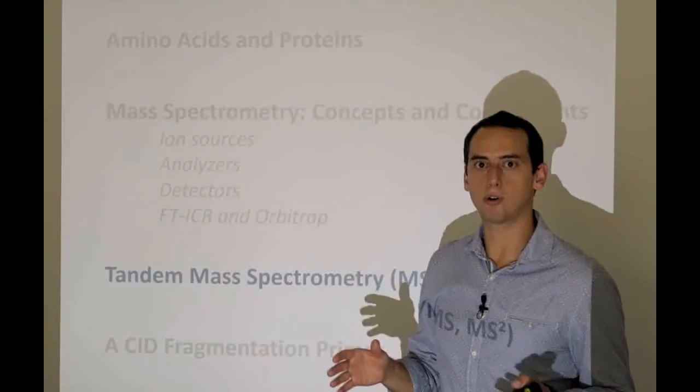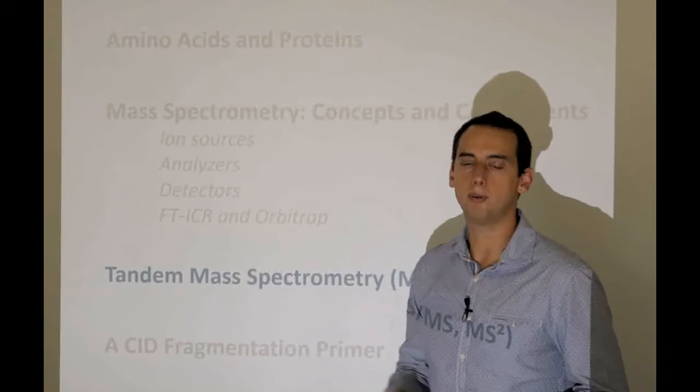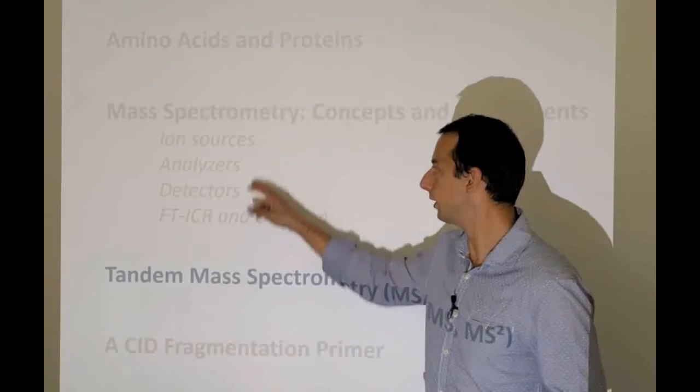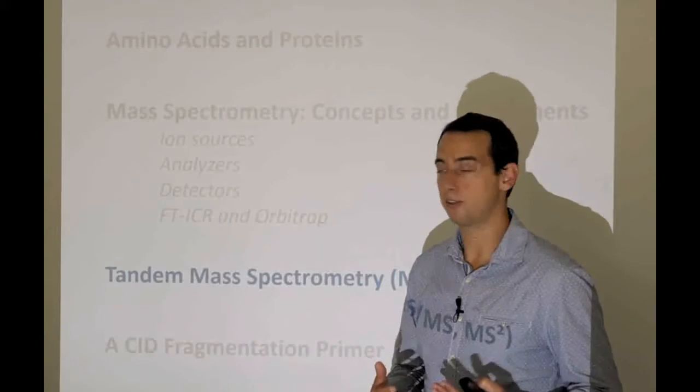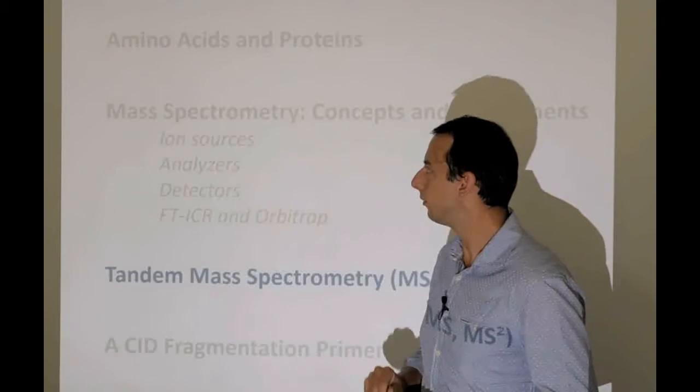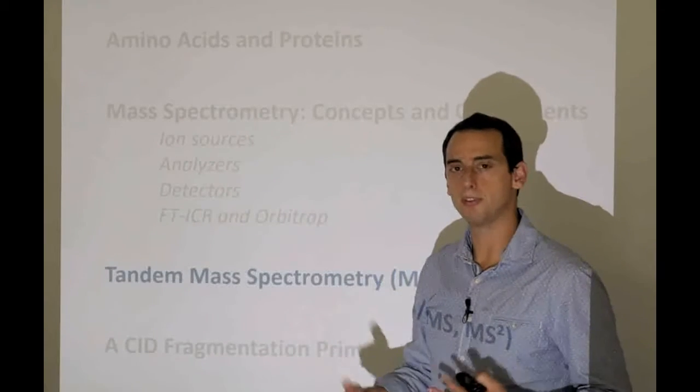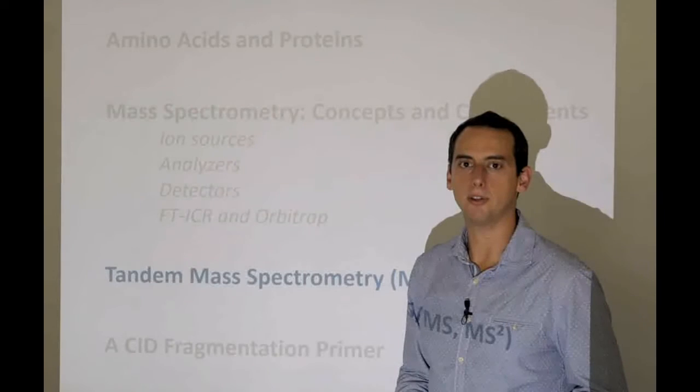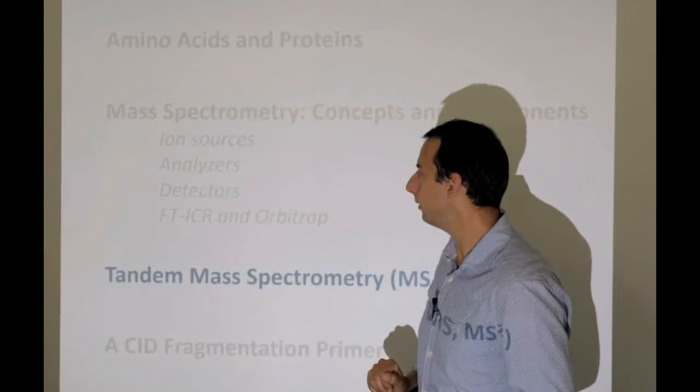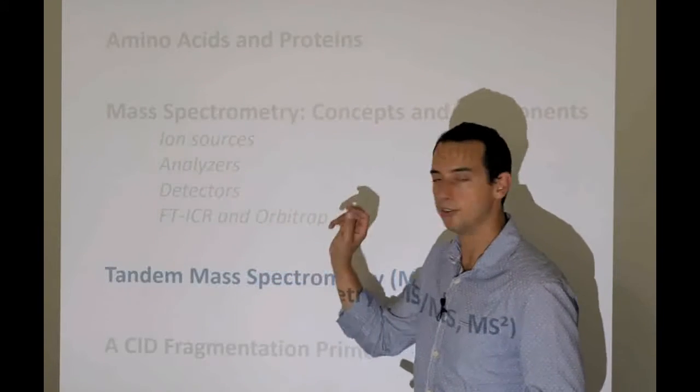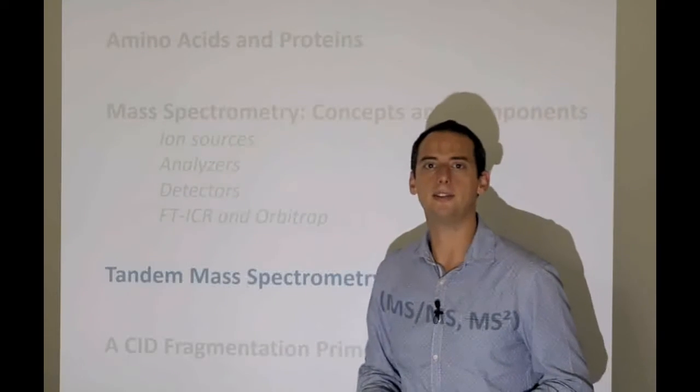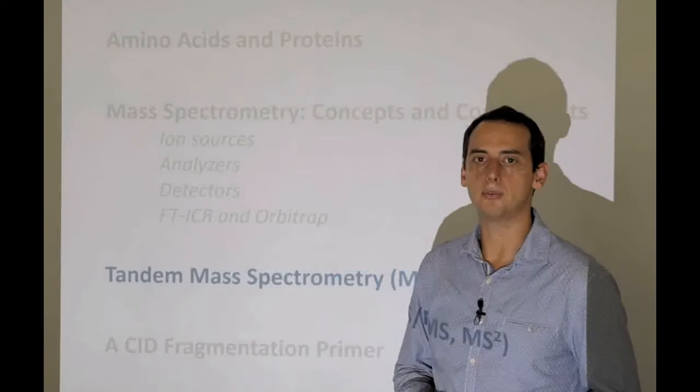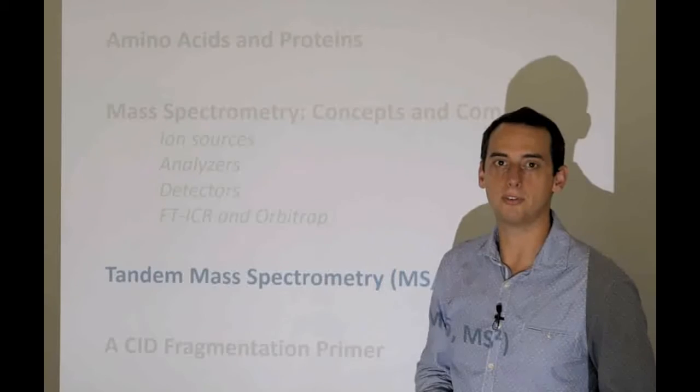The second lecture talked about mass spectrometry and its overall concepts, and about the two ion sources that are prevalent in the study of proteomics, which is MALDI and ESI. In the third lecture, we talked about the mass analyzers that actually find out what the inertial mass is of a particular ion. The fourth lecture was about detectors that finally detect the movement of the ions in the instruments. And then in the fifth lecture, we talked about Fourier transform ion cyclotron resonance and Orbitrap instruments, which essentially combine an analyzer and a detector.